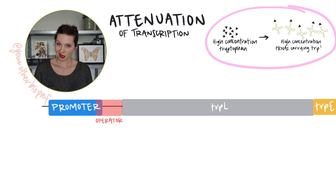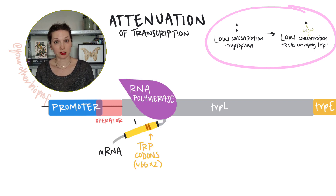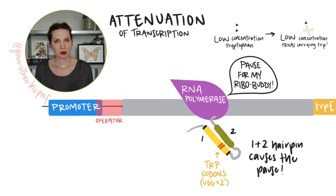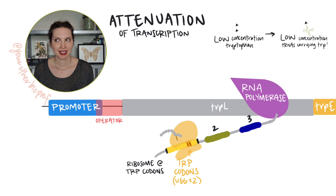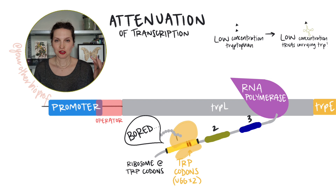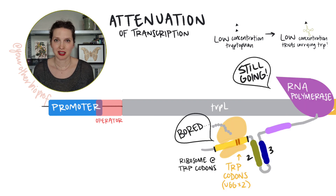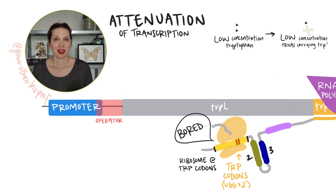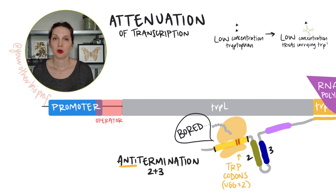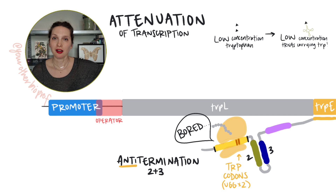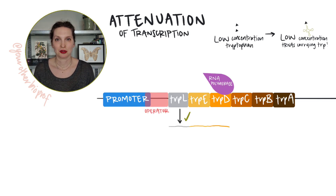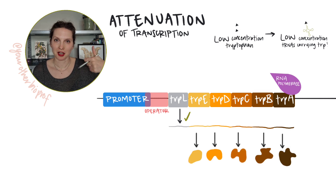But what if there's not plenty of tryptophan in the cell — what if the concentration is low? Well, in that case, when the ribosome gets to those two tryptophan codons, it's going to have to wait. It's going to stall out. Low tryptophan in the cell means there's not a lot of tRNAs charged with tryptophan. The ribosome gets stuck. That means it's not blocking region two, so regions two and three will form a hairpin. The 2-3 hairpin is no problem for RNA polymerase — it's going to keep moving along to transcribe the structural genes to produce more tryptophan and increase that concentration.